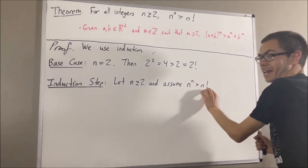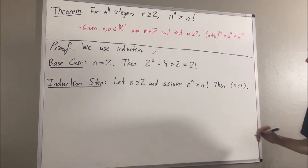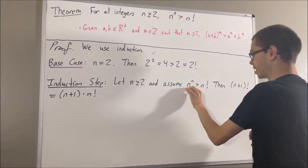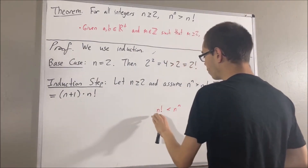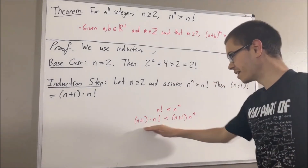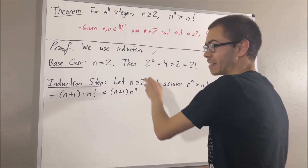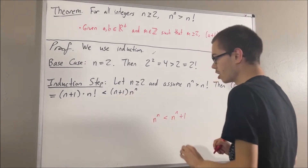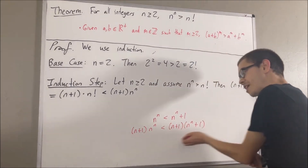I'm going to start out by writing the right-hand side. Now, n plus 1 factorial is really just n plus 1 times n factorial. By our induction hypothesis, n factorial is less than n to the power of n. If we take both sides of this inequality and multiply by n plus 1, we get that n plus 1 times n factorial is less than n plus 1 times n to the power of n. Also, n to the power of n is less than n to the power of n plus 1, and multiplying n plus 1 on both sides gives n plus 1 times n to the power of n is less than n plus 1 times n to the power of n plus 1.